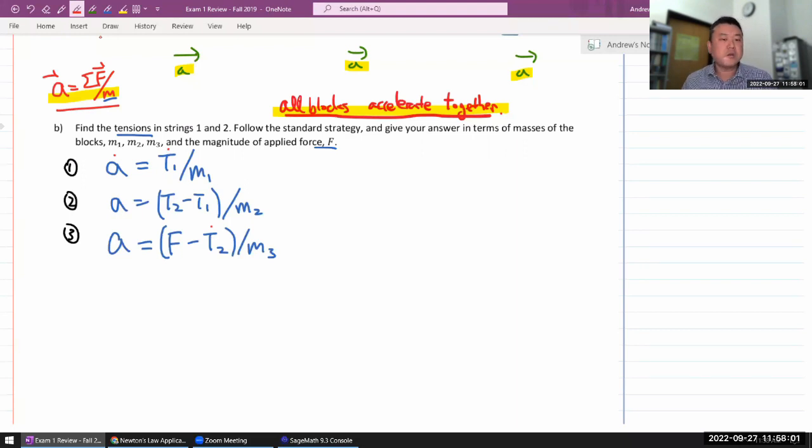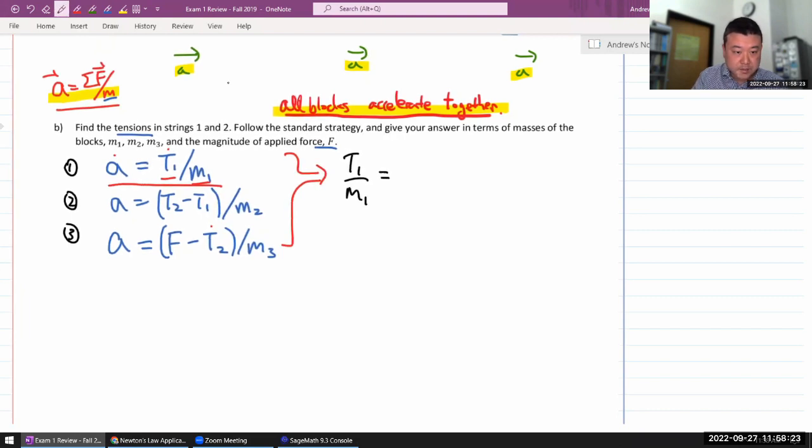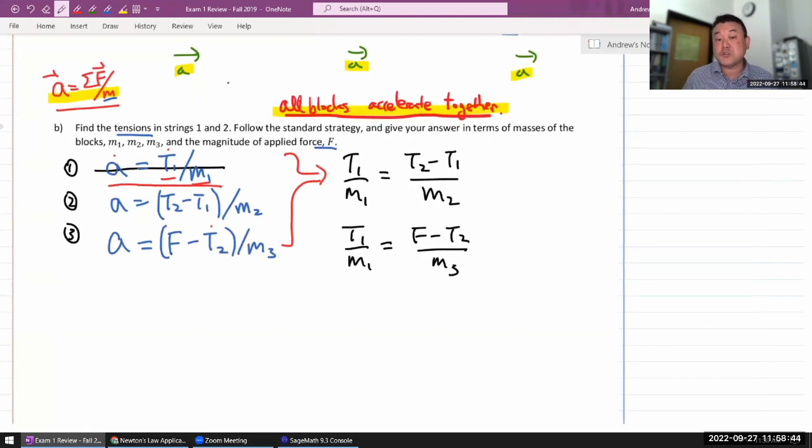So this will be the strategy then. Our goal is to eliminate acceleration from all our equations. And I think the simplest thing to do is our equation one is the simplest of three equations, so I'm just going to use this to eliminate A from my other two equations. So when you do that, you end up with T1 over M1 equals the right-hand side, T2 minus T1 over M2. And then plug that in here as well: T1 over M1 equals F minus T2 over M3. After that, I'm done with this equation. I do have to be careful not to reuse it.